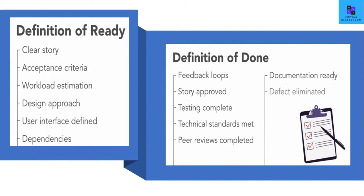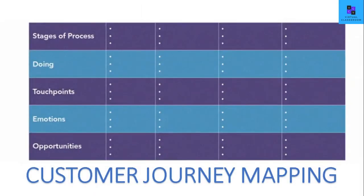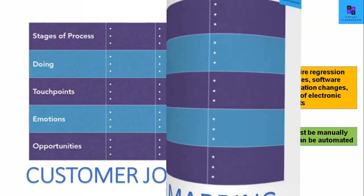Two of the most important Agile checklists are the definition of ready and the definition of done. Ensure you use these two checklists appropriately. Customer journey mapping is all about understanding your customer touchpoints and identifying the opportunities for improvement of your products.